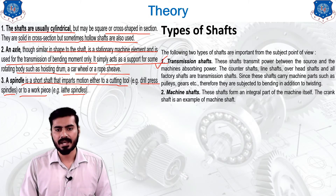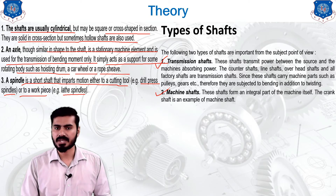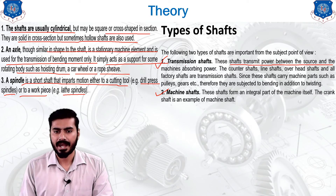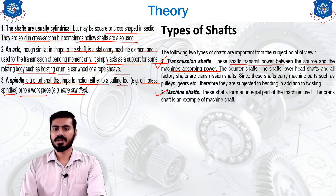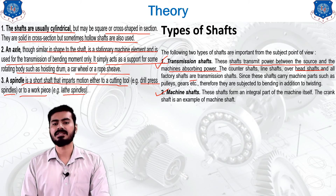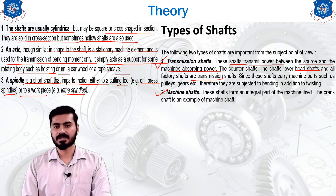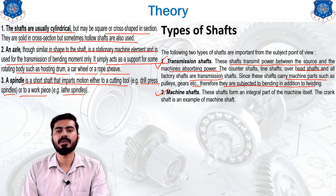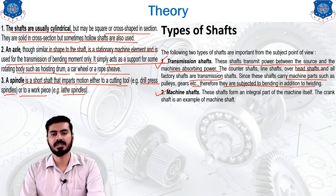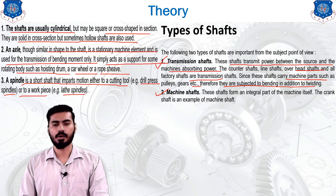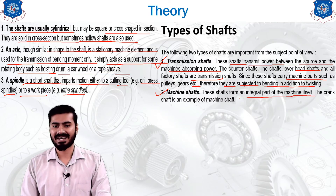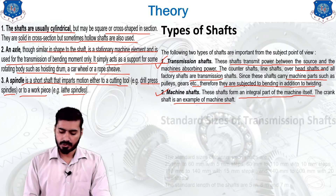The types of shaft include two categories: transmission shafts and machine shafts. A transmission shaft transmits power between the source and the machine absorbing power — counter shafts, line shafts, overhead shafts, and factory shafts are examples. Since these shafts carry machine parts such as pulleys and gears, they are subjected to bending in addition to twisting, so combined bending and twisting stresses must be considered in design. Machine shafts form an integral part of the machine itself — the crankshaft is an example.